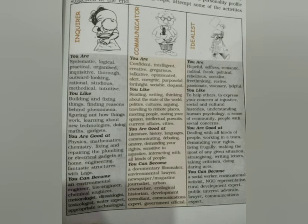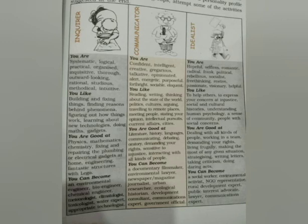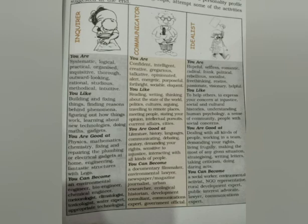Coming to the next one — communicator. Communicator comes from the word 'communicate.' You are a communicator if you are confident, intelligent, creative, and gregarious — gregarious means you like to mix with people, you are fond of company, you like talking to people. If you are talkative, opinionated — you have your own opinions — alert, energetic, purposeful — your life has a goal and is not boring — forthright — you speak out whatever comes to your mind — sociable, and eloquent. Eloquent means you are fluent, good at writing, reading, and speaking. You like reading, writing, thinking about politics and cultures, arguing, traveling to remote places, meeting people, stating your opinions, intellectual pursuits, and current affairs.